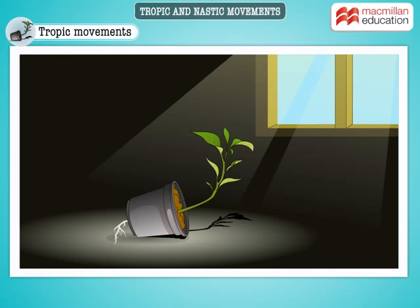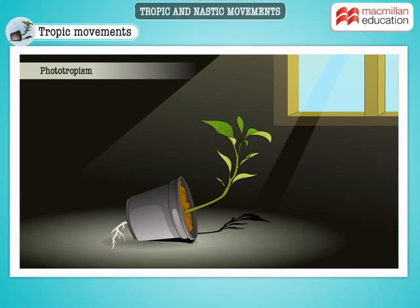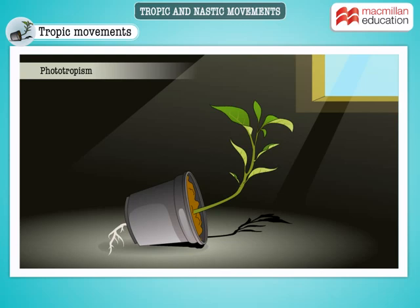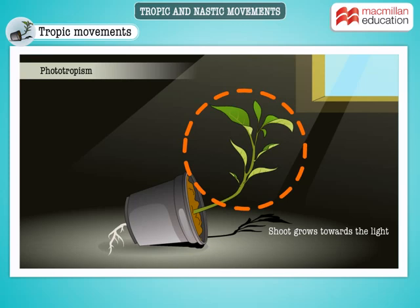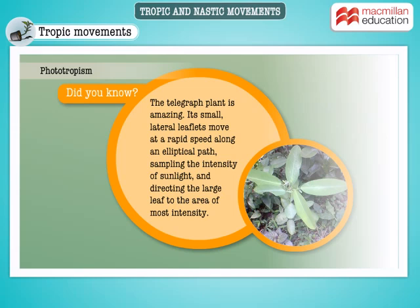Take a look at this plant kept indoors. We have chosen a pot that is open on both ends. All the stems have turned towards the window, that is, towards light. Movement in plants due to light is called phototropism. The shoot of the plant grows towards the light and the root grows against the light — shoots are positively phototropic and roots are negatively phototropic.